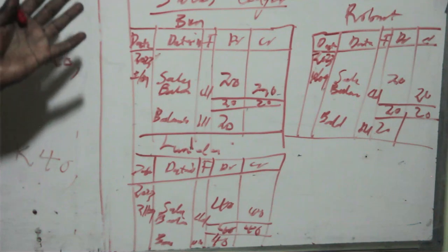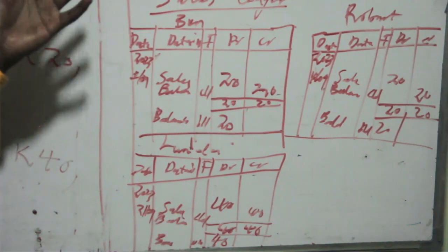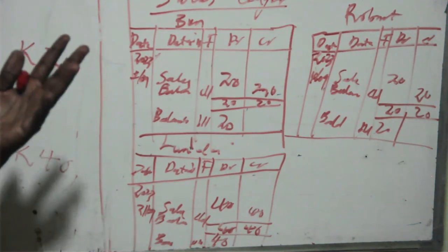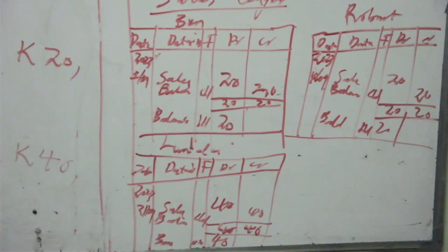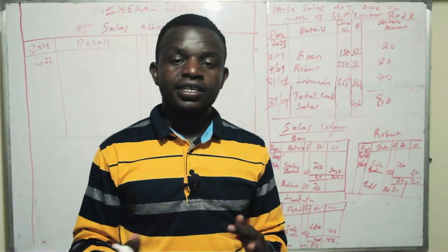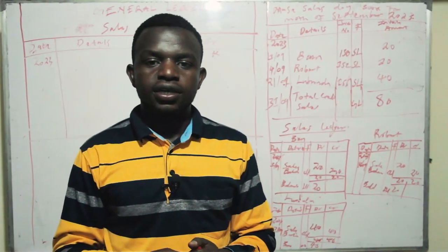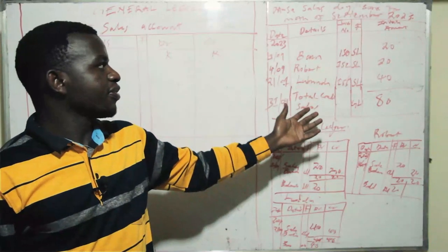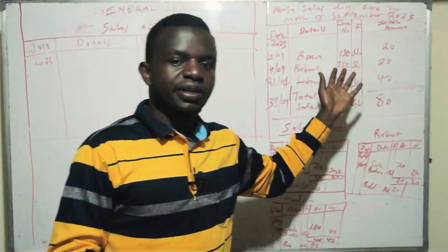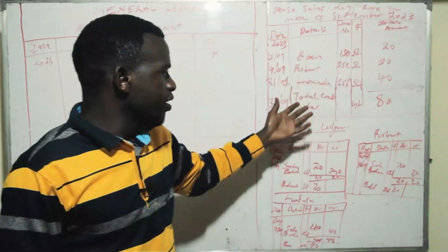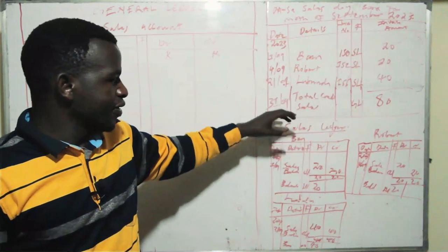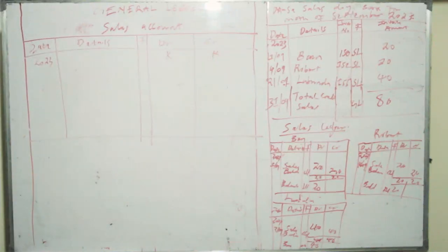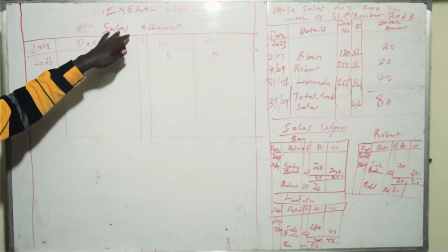We have now prepared the sales daybook and the sales ledger. Let us now prepare the general ledger that shows the sales account. In the general ledger, we're going to show the sales account, obtaining the information from what we have already put up. In the sales ledger we showed the debtors' accounts, and now we write down the general ledger with the sales account.